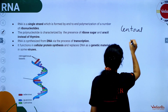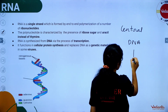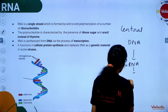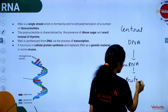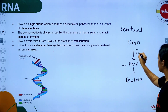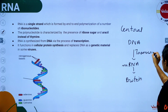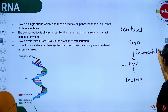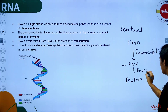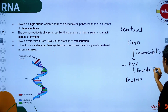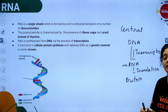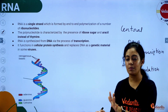Central dogma of molecular biology: DNA → RNA (mRNA) → Protein. The process of conversion of DNA to RNA is called transcription. The process of conversion of RNA to protein is called translation.